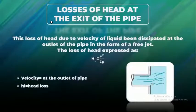Next, loss of head at the exit of the pipe. This loss is due to the velocity of the liquid being dissipated at the outlet of the pipe in the form of a free jet. The loss of head expressed is h equals v squared by 2g, where v is the velocity at the outlet and h is head loss.